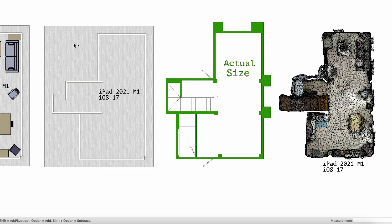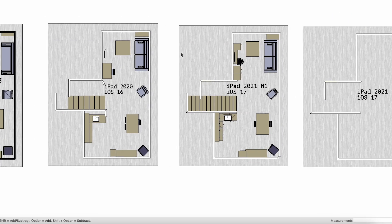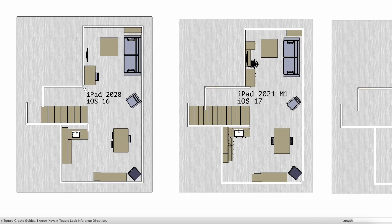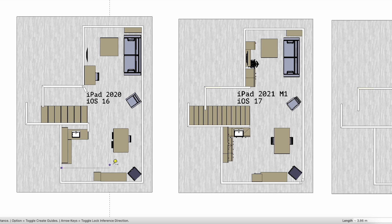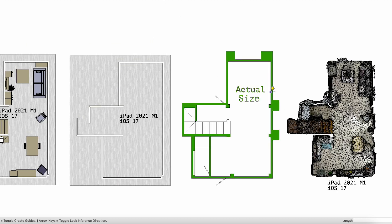Next we will be looking at the measurements and see how they compare with the actual size. Measuring the iOS 16 version: the width of the room is 323 and the length is 853. Compared with the iOS 17 version that has it at 319 by 843. The length here is 448 on iOS 17 and 450 on the iOS 16 version. The actual size is 320 by 447 and 450 at the last wall.